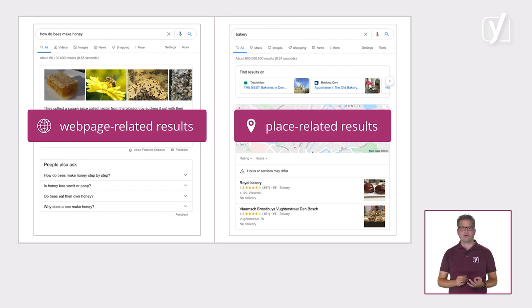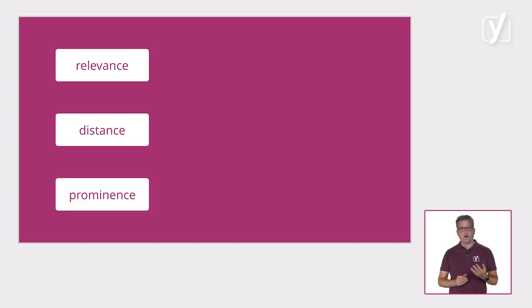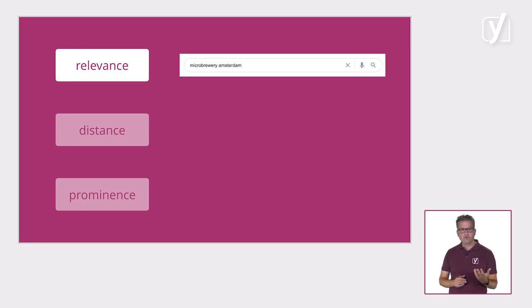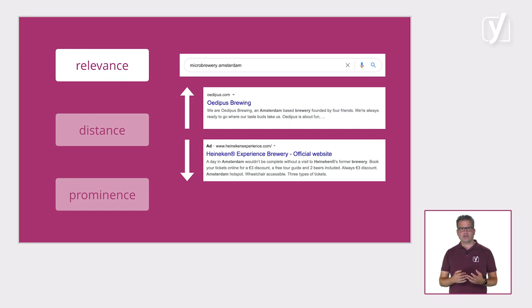But how do you optimize your website for these local results? Google determines the ranking of local search results primarily on three factors: relevance, distance, and prominence. The first factor, relevance, refers to how well a local listing matches what someone is searching for. For example, if someone is searching for 'microbrewery in Amsterdam,' Google would rank a small local brewery higher than the big Heineken brewery.